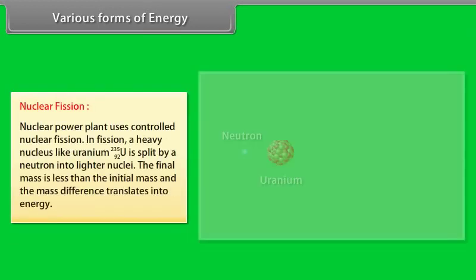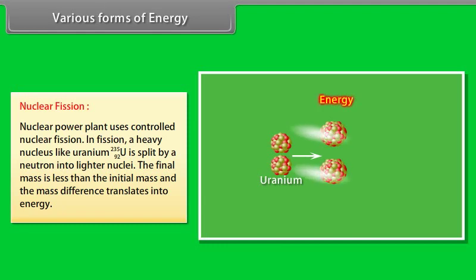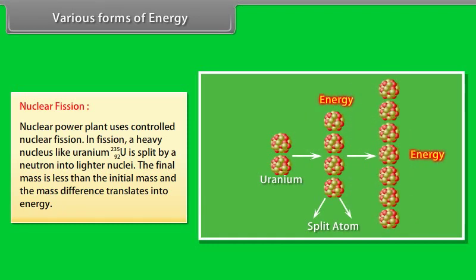In sun, four light hydrogen nuclei fuse to form a helium nucleus whose mass is less than the sum of the masses of the reactants. This mass difference is called the mass defect delta m is the source of energy. Nuclear fission: nuclear power plant uses controlled nuclear fission. In fission, a heavy nucleus like uranium 235/92 is split by a neutron into lighter nuclei. The final mass is less than the initial mass and the mass difference translates into energy.